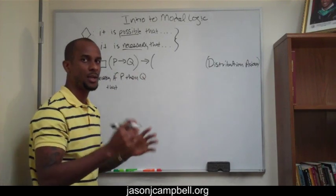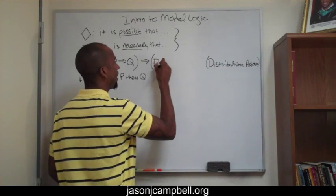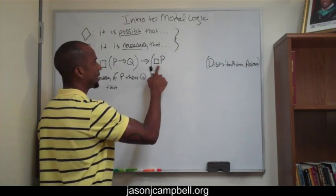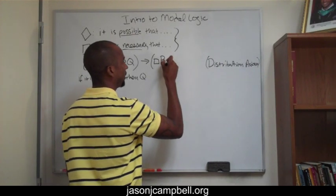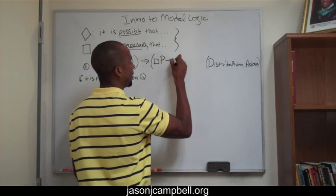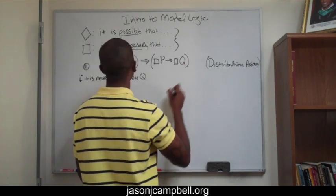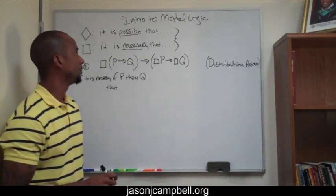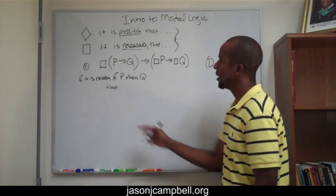Very, very basic - it doesn't need to be all that complicated. So then I just say: then necessarily P, so if necessarily P, then necessarily Q. And that's it. Now we've learned the distribution axiom.